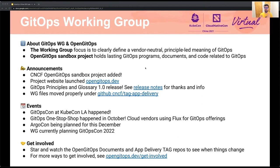How to get involved? Join us in developing GitOps case studies, best practices, and other things that build on top of the principles now in V1. Help us plan GitOps events if you're into that kind of thing — we have a really great team that does that. Help with the direction of the OpenGitOps project. Go to opengitops.dev and see us on Slack. Thanks very much.